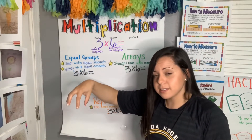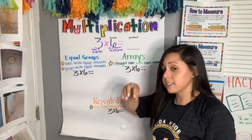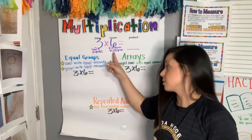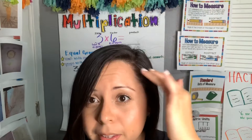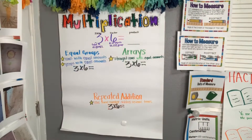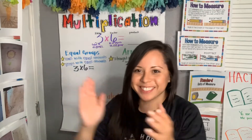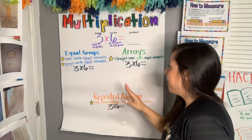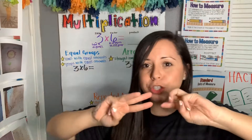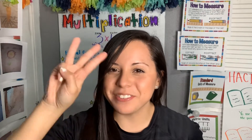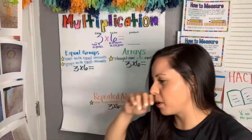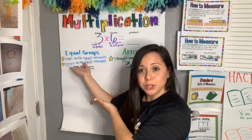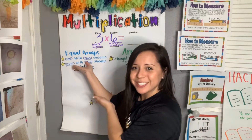So the first group will have six things, the second group will have six, and the third group will have six. The product is what we're going to find out. Now I'm going to show you three ways to solve multiplication problems. The first one is solving it using equal groups — get excited!